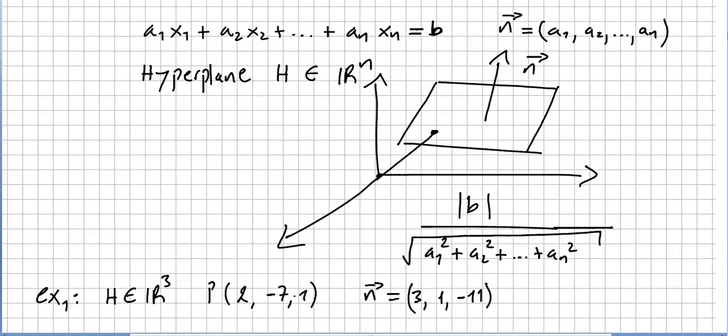In this video I'm going to take a couple of exercises. Let's do this first one. We are going to pick a hyperplane in the space R^3 that passes through point (2, -7, 1) and that has normal vector (3, 1, -11).